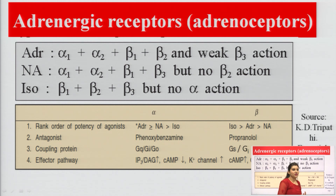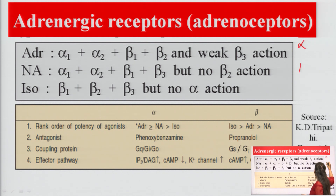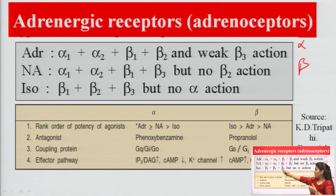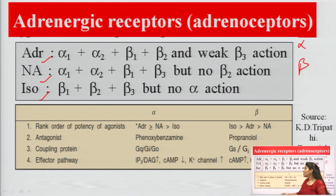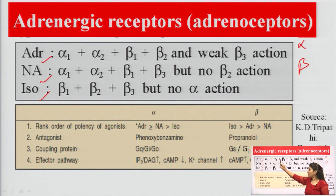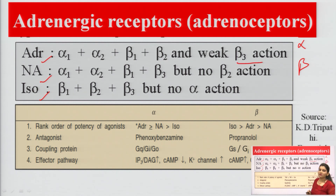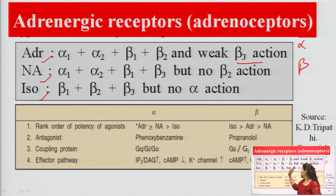There are two types of adrenergic receptor: alpha receptor and beta receptor. Adrenaline interacts with alpha-1, alpha-2, beta-1, and beta-2 receptors but has weak beta-3 action. Noradrenaline has alpha-1, alpha-2, beta-1, and beta-3 action, but has no beta-2 action. Isoprenaline is a synthetic compound used for comparison.